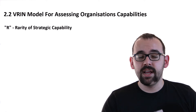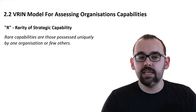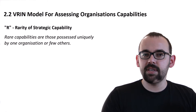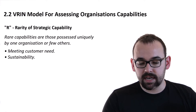The second letter, R, stands for Rarity of strategic capability. Rare capabilities are those possessed uniquely by one organization or by few others. We should be different — our products should be different from our competitors'. Yet it is not so easy; just being different doesn't mean you are useful. There are two important points: we have to meet customers' needs, and we have to be unique in a way that is valuable for the customer.